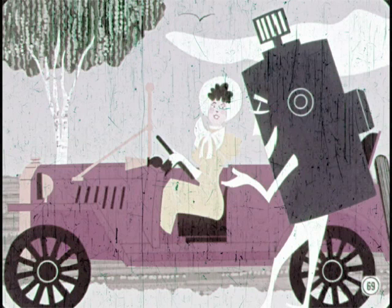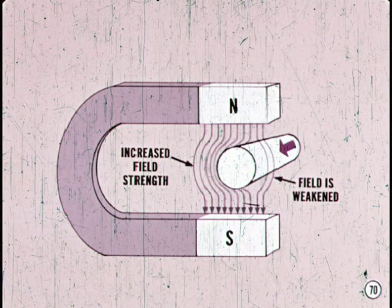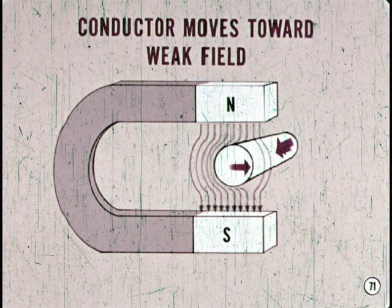The electric motor probably did more to make automobiles popular than any other electrical device. The electric starting motor sure put women in the driver's seat. Let's take time to see how a direct current electric motor works. Here we see a current carrying conductor in a magnetic field. Notice that on one side of the conductor, the concentric lines of force increase the field strength. On the other side of the conductor, the field is weakened. This unbalanced field condition pushes the conductor. It moves away from the strong field and toward the weak field. This basic electromagnetic principle is used to change electrical energy to mechanical energy.